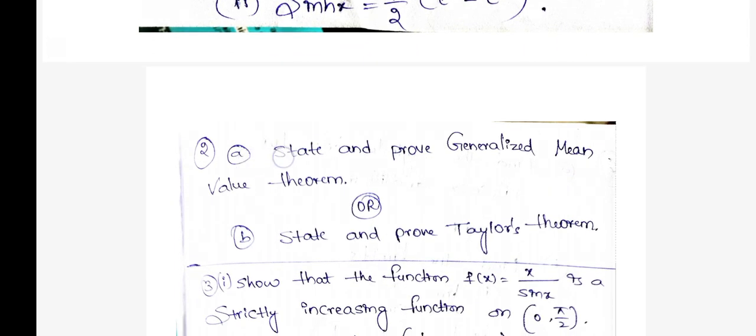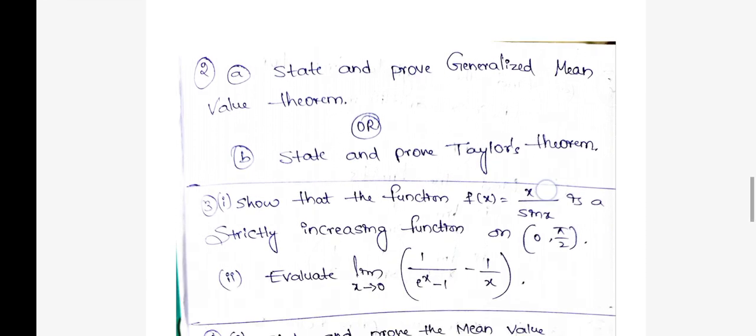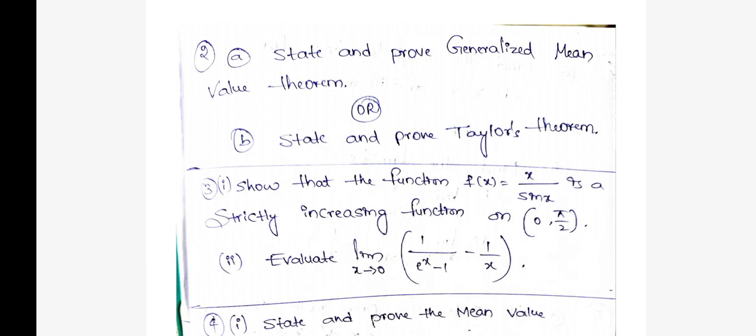Second question: state and prove generalized mean value theorem, very important, or b: state and prove Taylor's theorem. Taylor's theorem is important. Statement is also important, statement gives you 3 marks.